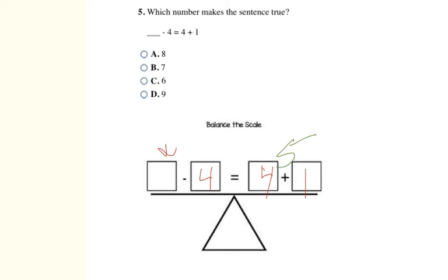And so 4 plus 1 here is going to be 5. So I'm looking for what number, if I subtract 4 from it, will give me 5. Well here, because I'm looking for the bigger number, I can do the opposite operation. So I can take 5 plus the 4, because it's the opposite operation. So 5 plus 4 equals 9. So 9 is going to be my final answer, which is D.